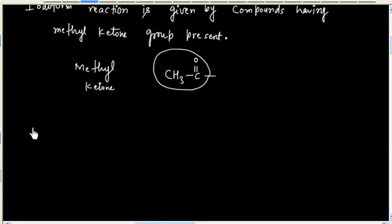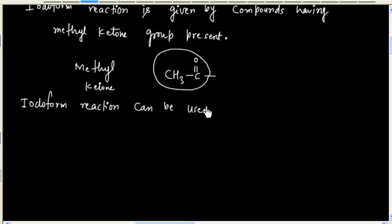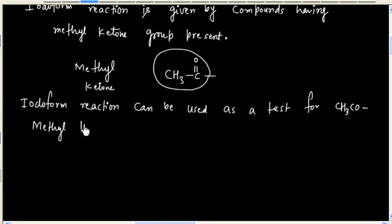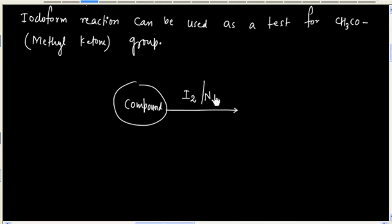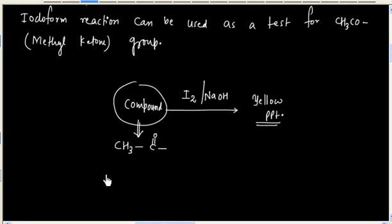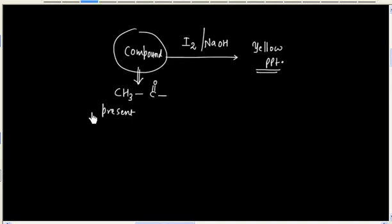This reaction can be used as a test for the methyl ketone group. If a compound has a methyl ketone group (CH3CO) and we treat it with I2 and NaOH, it will form a yellow precipitate. This means the compound has the methyl ketone group present, and this is known as the Iodoform test.